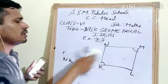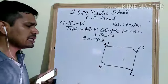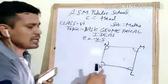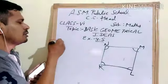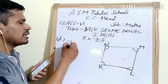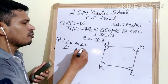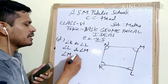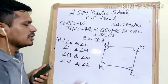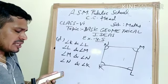Let's take part D. In part D, they are asking about two pairs of adjacent angles — that means neighboring angles. Angle K's neighboring angle is angle L. Angle L's neighboring angle is angle M. Angle M's neighboring angle is angle N. And angle N's neighboring angle is angle K. So this was the fourth part — hope you understand.